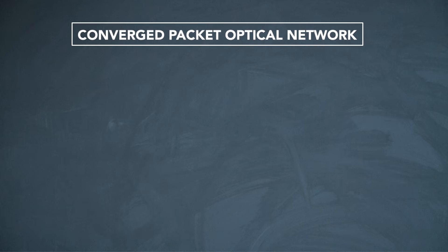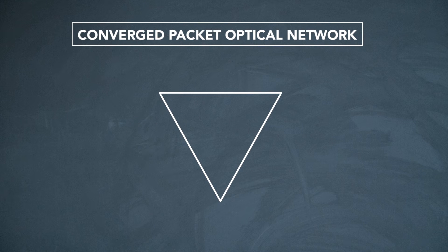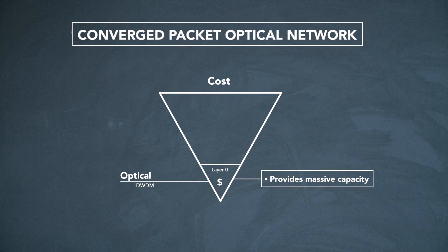And so what is a converged packet optical network? Well, it's really the combination of three different technologies. At layer zero, we have a very agile optical layer built on DWDM technology. And this provides the capacity for the network because it enables multiple wave services to be carried on a single fiber.